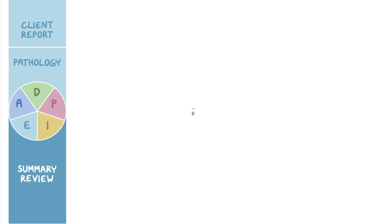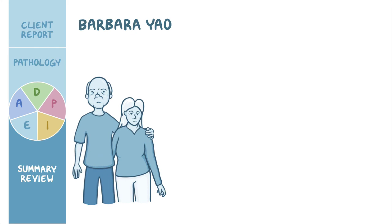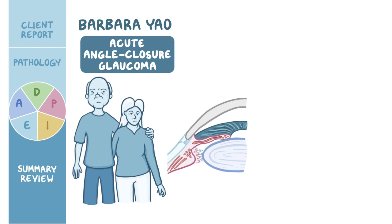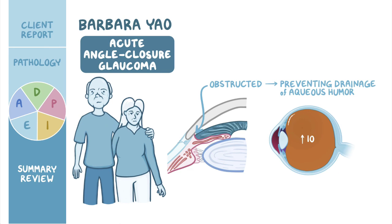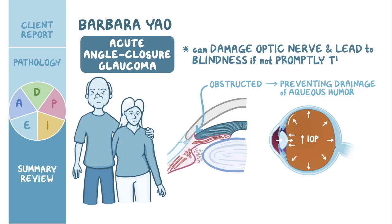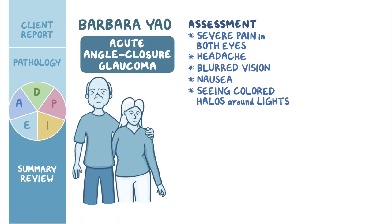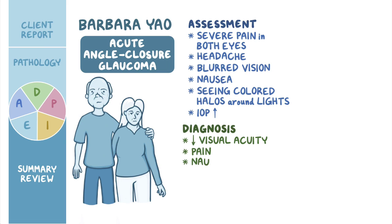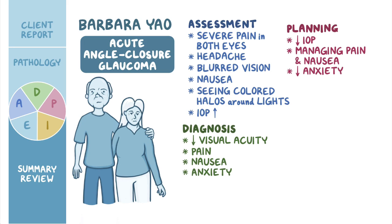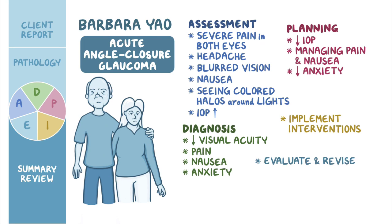As a quick recap, your assigned client Mrs. Barbara Yao presented to the emergency department with symptoms of acute angle-closure glaucoma, which is when the angle between the cornea and iris is obstructed, preventing the drainage of aqueous humor. This causes a rapid buildup of IOP, which can damage the optic nerve and lead to blindness if not promptly treated. Your assessment revealed severe pain in both eyes, headache, blurred vision, nausea, colored halos around lights, and elevated intraocular pressure. Your nursing diagnoses included decreased visual acuity, pain, nausea, and anxiety. The goals included reducing her IOP, managing her pain and nausea, and reducing anxiety. After implementing interventions, you continue to evaluate and revise the plan of care as needed.